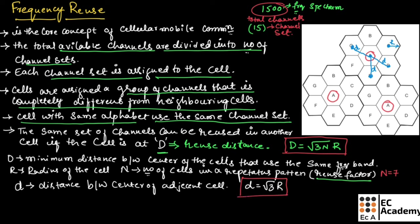You need to remember that the frequency cannot be reused by the neighboring cells. For example, the frequencies used by cell A cannot be reused by cell D or cell B. The frequency can be reused only by the cells available in the neighboring clusters with the same name. The channel cannot be reused by neighboring cells — only by channels in neighboring clusters. This is about frequency reuse. Hope you have understood the topic. Thank you.